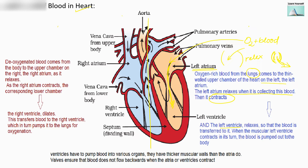The left ventricle receives that blood from the atrium, so blood flows from the left atrium to the left ventricle. Once the left ventricle receives the blood, it will relax and fill with blood. Then it will contract — its size will shrink — and push the blood out. When the muscular left ventricle contracts, the blood is pumped out to the body.